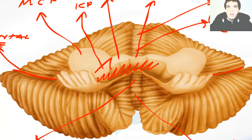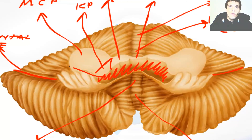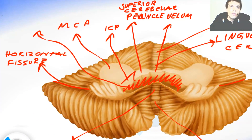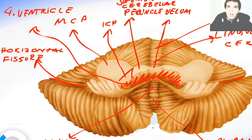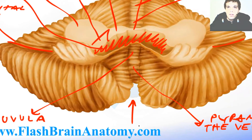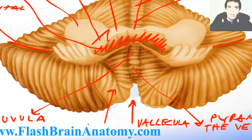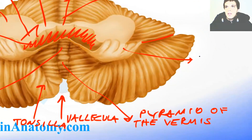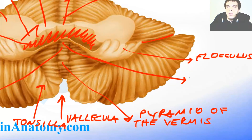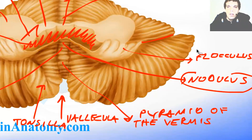The space over here was the fourth ventricle. Then we had the velum and the tonsilla. We had the flocculus, and this part over here was called the nodulus. The nodulus and flocculus together create the flocculonodular lobe.